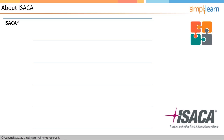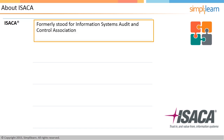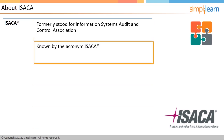ISACA is the governing body that conducts the CRISC examination and provides certification to qualified aspirants. The acronym ISACA formerly stood for Information Systems Audit and Control Association. However, as the association grew, its mandate expanded beyond audit and controls to become the leading global provider of knowledge, certifications, community, advocacy, and education on information systems assurance and security, governance and management of IT, as well as IT-related risk and compliance. Thus, it is currently known only by the acronym ISACA.